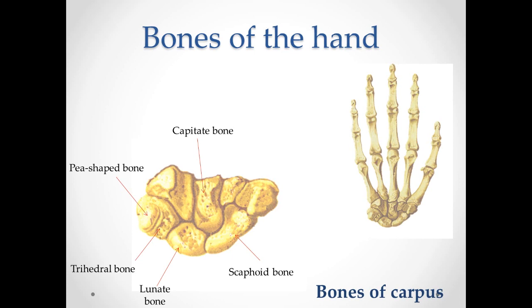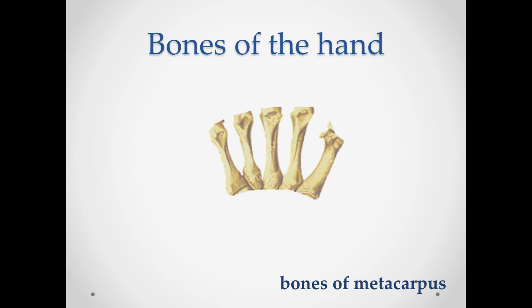Now the distal row. Trapezium bone, os trapezium — has a large saddle surface. Trapezoid bone, os trapezoideum. Capitate bone, os capitatum. Hooked bone, os hamatum. Metacarpal bones include five short tubular bones, in each of which we distinguish the base, basis, body, corpus, and head, caput.